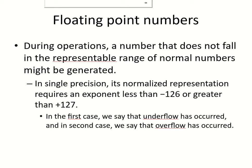There is a possibility that while doing operations with floating point numbers, you might have a very small number or a very large number as a result which cannot be represented by the representable range of normal numbers. There's a possibility that the exponent that is required could be less than minus 126 or greater than 127.